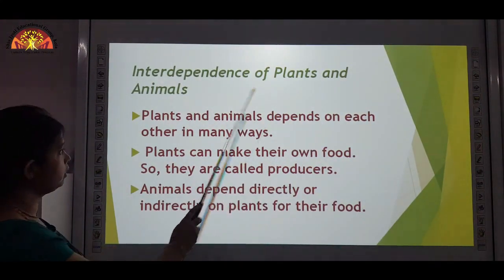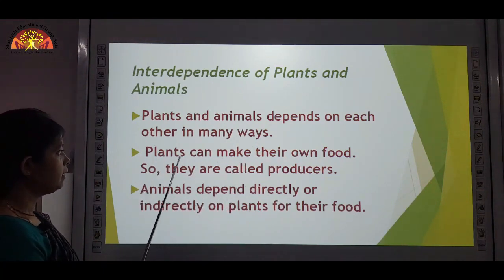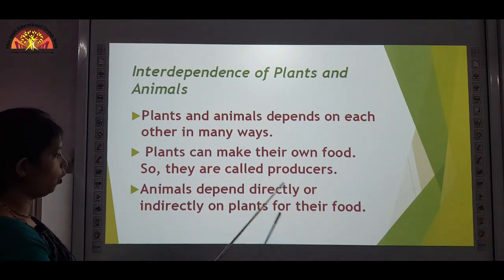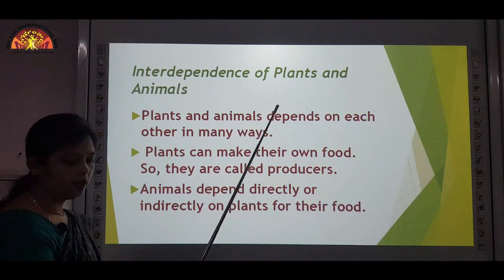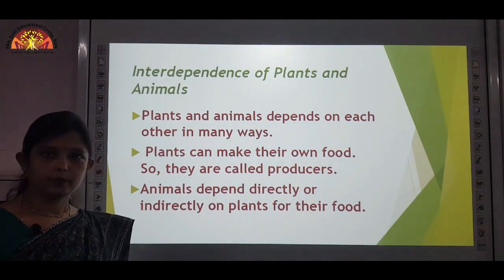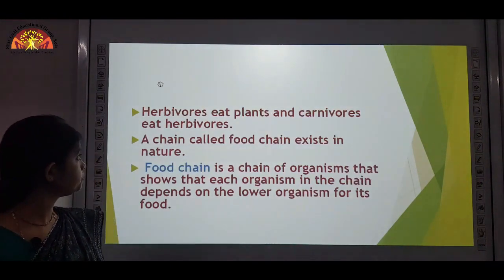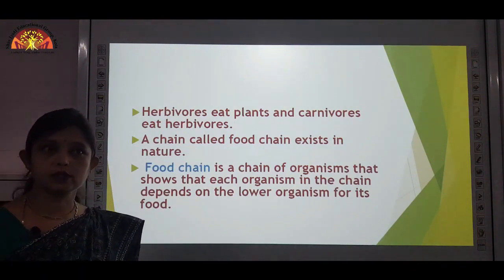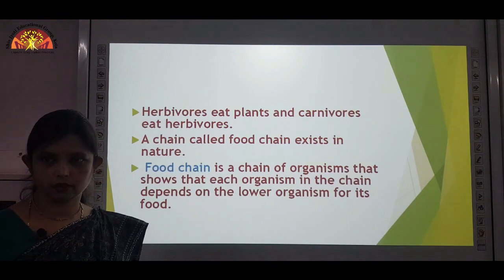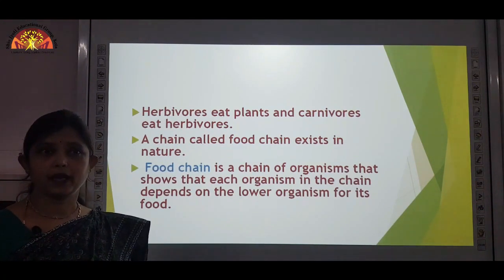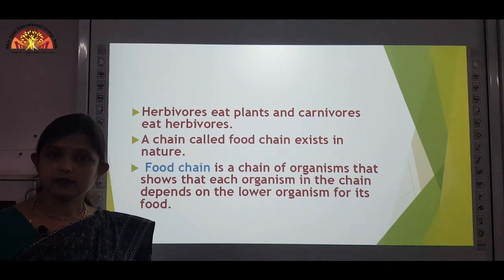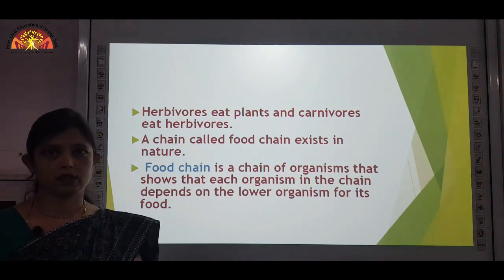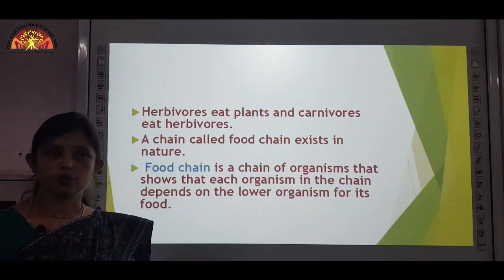Plants and animals depend on each other in many ways. Plants can make their own food, so they are called producers. Animals depend directly or indirectly on the plants for their food — first dependence is for food. Secondly, during the process when plants produce their food, they also give out oxygen. This oxygen is used by animals for breathing, and at the same time, animals give out carbon dioxide when they breathe out, which is then used by plants.